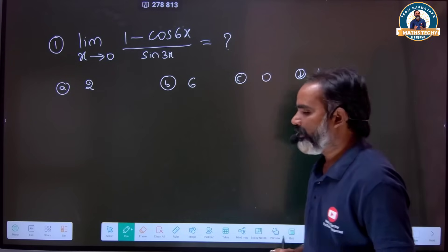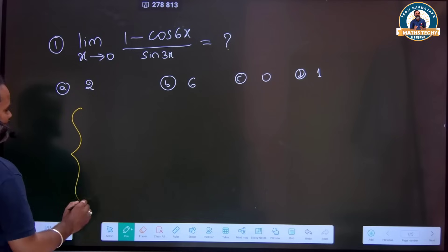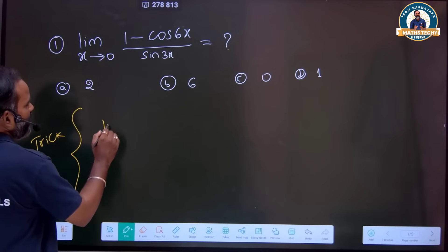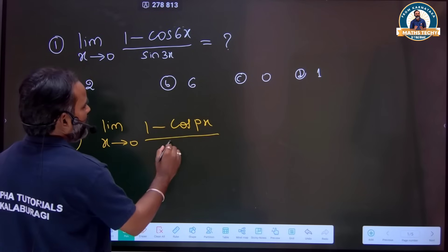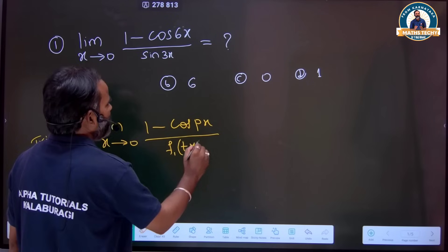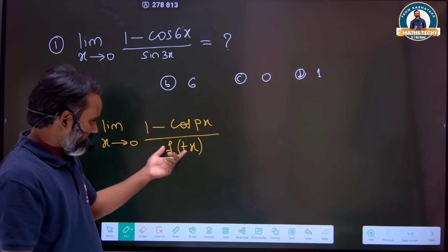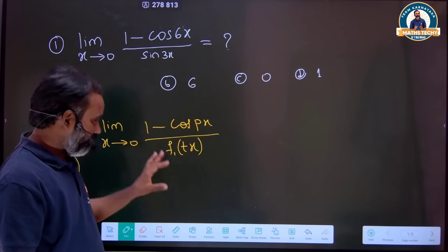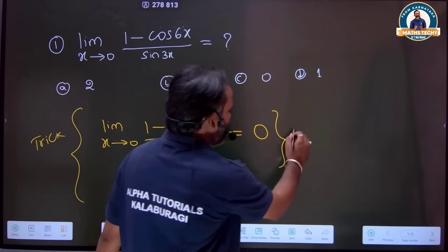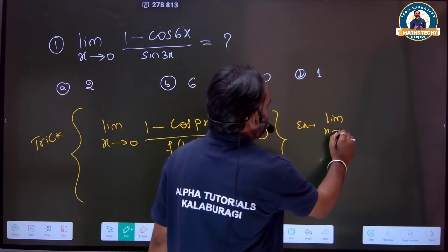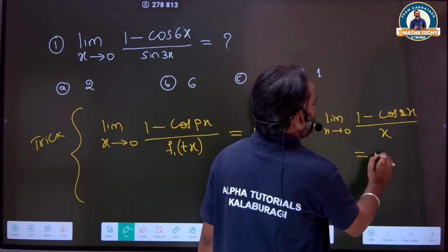There is an option here. The trick is: limit x tends to 0 of (1 minus cos px) divided by tx, where tx is any function — algebraic, trigonometric, cosec, sec — this answer will always be equal to 0.